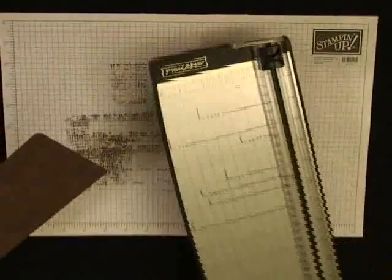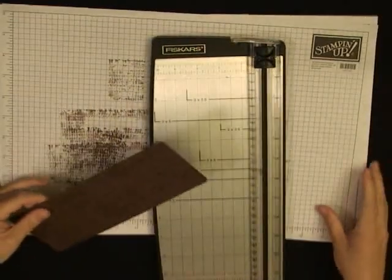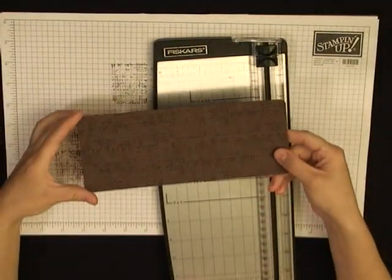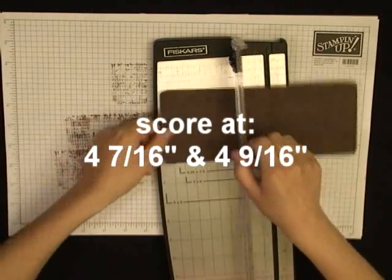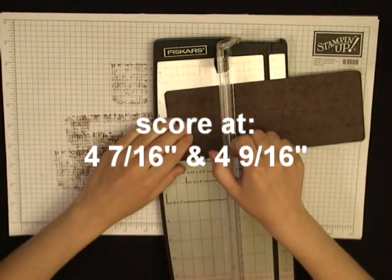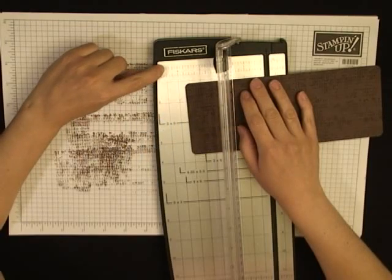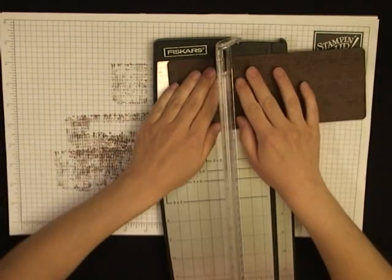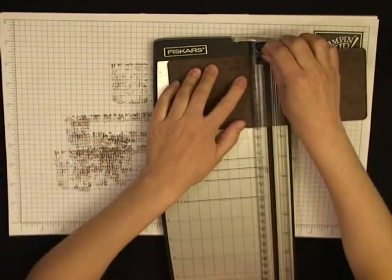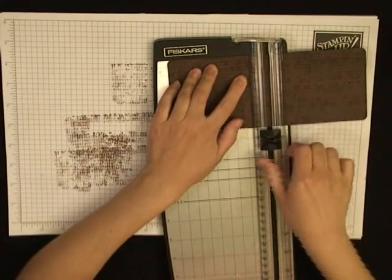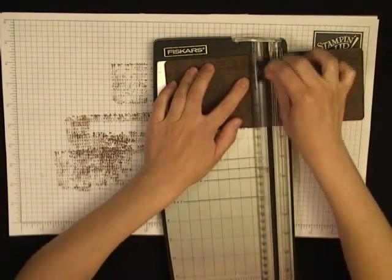Now that you've stamped all the pieces it's time to score the largest two pieces of card stock. Take the piece with the rounded corners and score it at four and seven sixteenths and four and nine sixteenths. It's this little teeny line on either side of the four and a half mark.